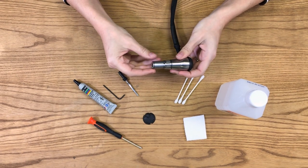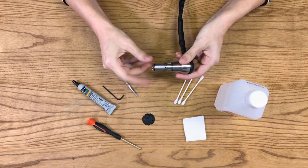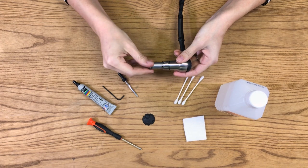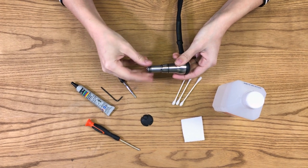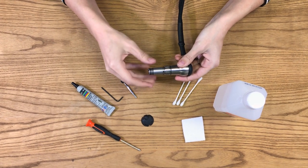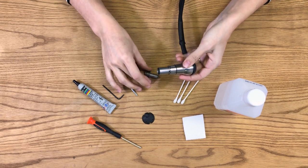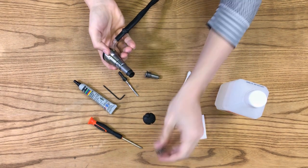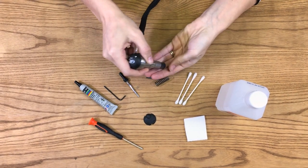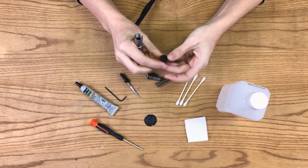So first things first, you're going to unscrew the very end of your hand piece. You're going to have a spring come out and then also your piston.